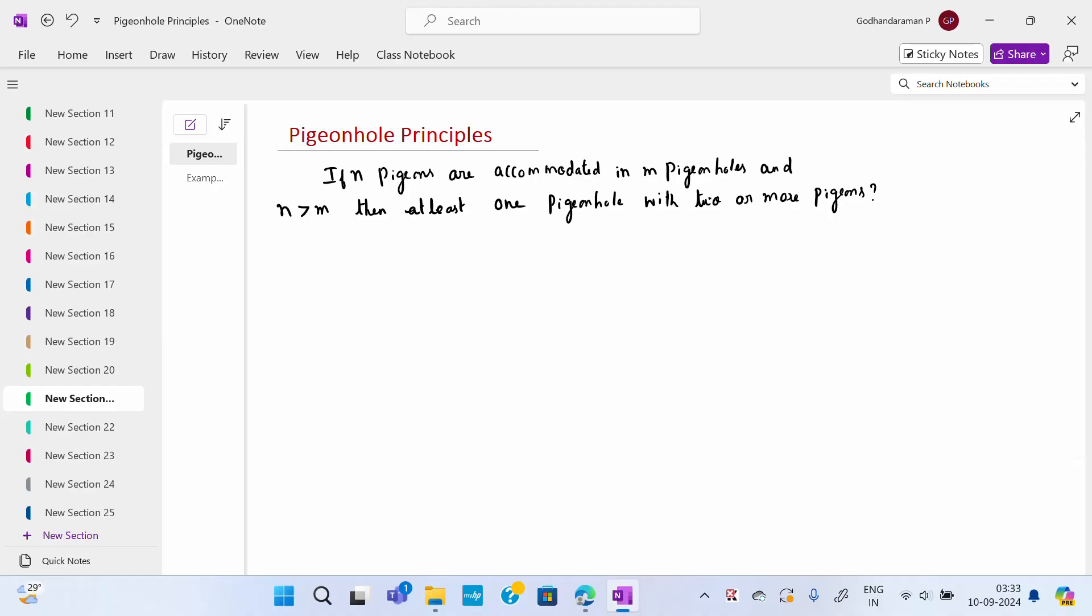This we can say it in simple terms without using the pigeon. You already studied in your probability subject, n objects in m boxes, n is greater than m, then at least one box will contain two or more objects. So the same thing only, ball or box or objects. Instead of that, they are using pigeon here. So that is the statement for a pigeonhole principle.